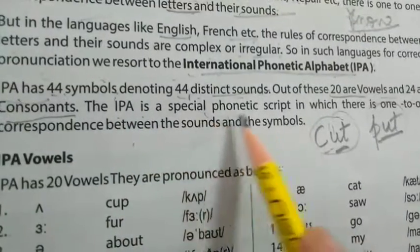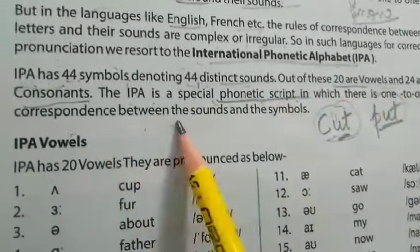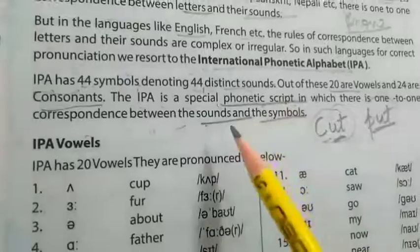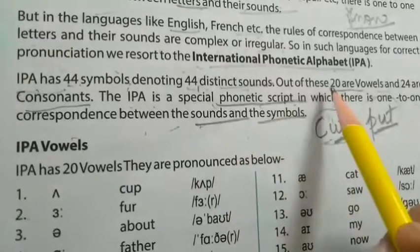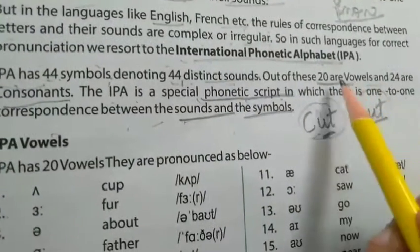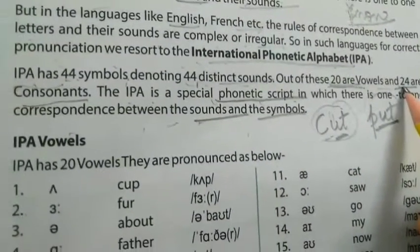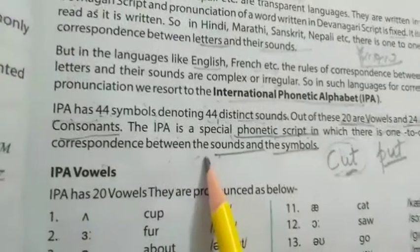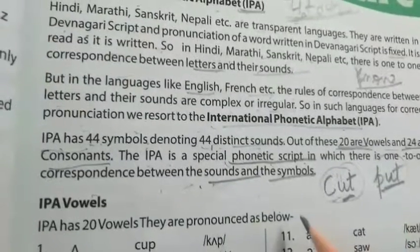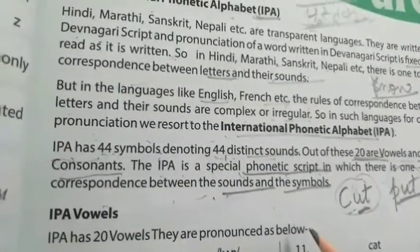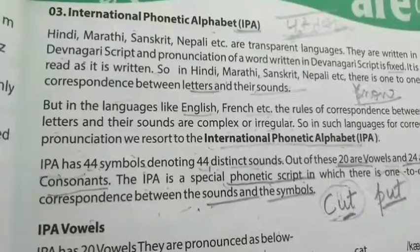The IPA is a special phonetic script in which there is a one-to-one correspondence between sounds and symbols — as many sounds, that many symbols. For vowels we have 20 and for consonants we have 24. That is it for this video. We will discuss the rest of the chapter in the next video. Please watch this video and try to understand this chapter carefully. Till then, bye-bye, take care, have a good day.